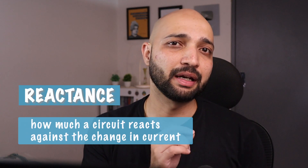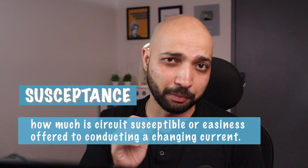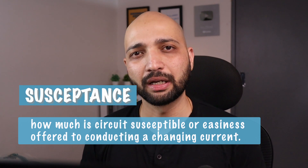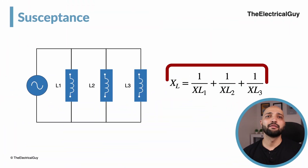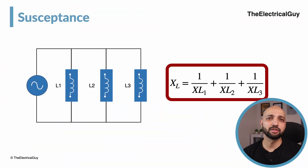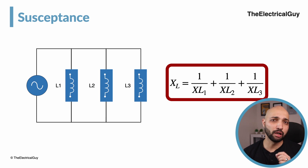There is a logic why the names reactance and susceptance were given: reactance means how much a circuit reacts against the change in current, whereas susceptance means how much easiness or susceptibility a circuit offers to conducting a changing current. Susceptance is denoted by letter B and, like conductance, is measured in Siemens. It is used where the circuit consists of inductors or capacitors connected in parallel, and susceptance is the reciprocal of reactance.